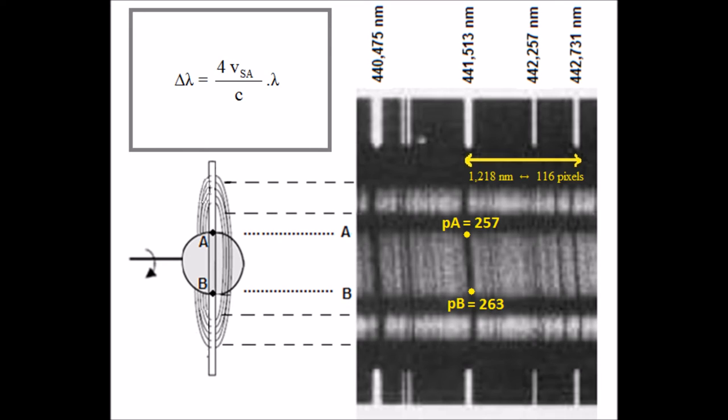We knew that that difference was also equal to 4 times the reference wavelength times the surface speed of Saturn divided by the speed of light. Thanks to this information, we isolated and calculated the surface speed of Saturn and found 10,000 meters per second.